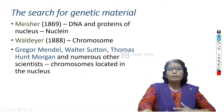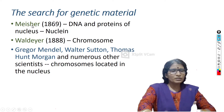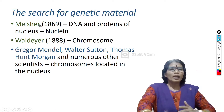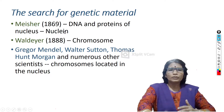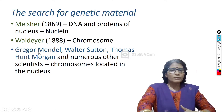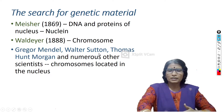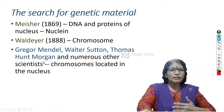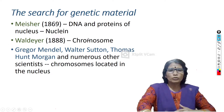The DNA and proteins of the nucleus were first identified by Meischer in 1869, and he called them Nuclein. Later, the term Nuclein was changed to chromosome in 1888 by Waldir. After that, scientists like Gregor Mendel, Walter Sutton, and Thomas Hunt Morgan did many experiments and concluded that chromosomes are usually located inside the nucleus.